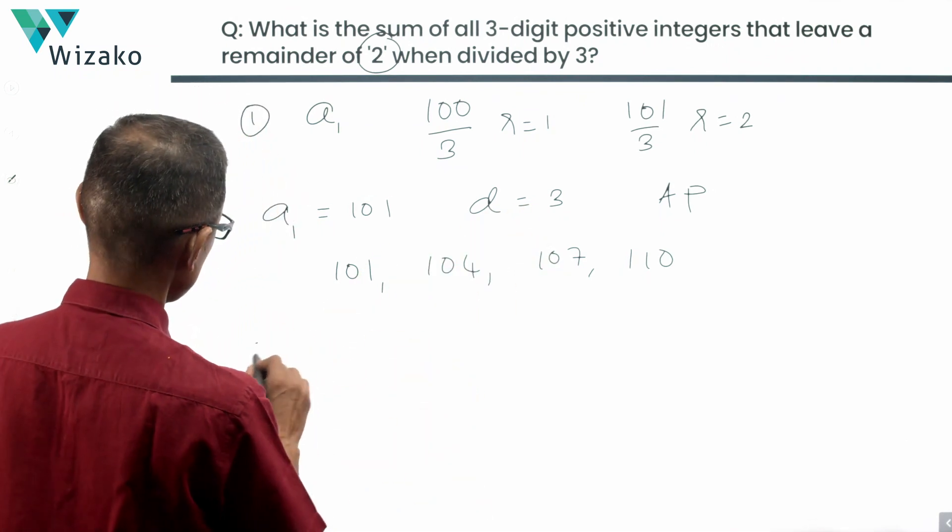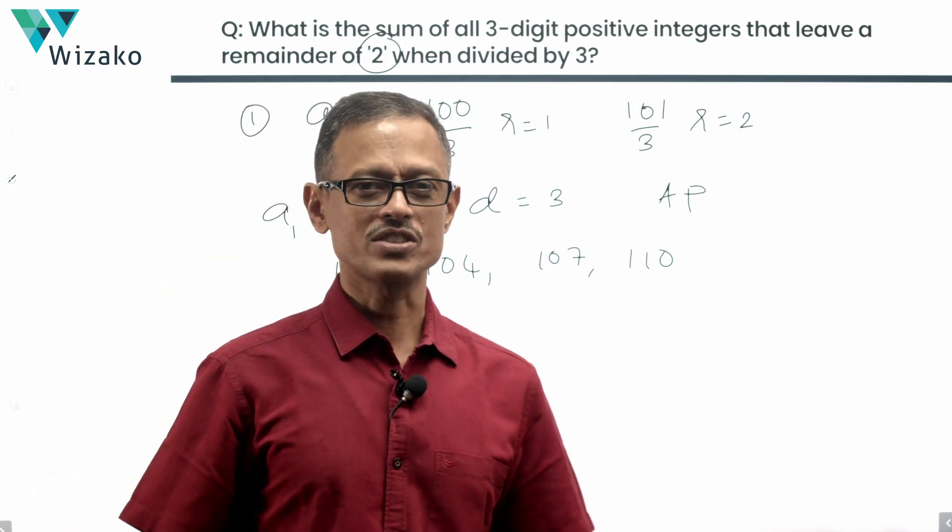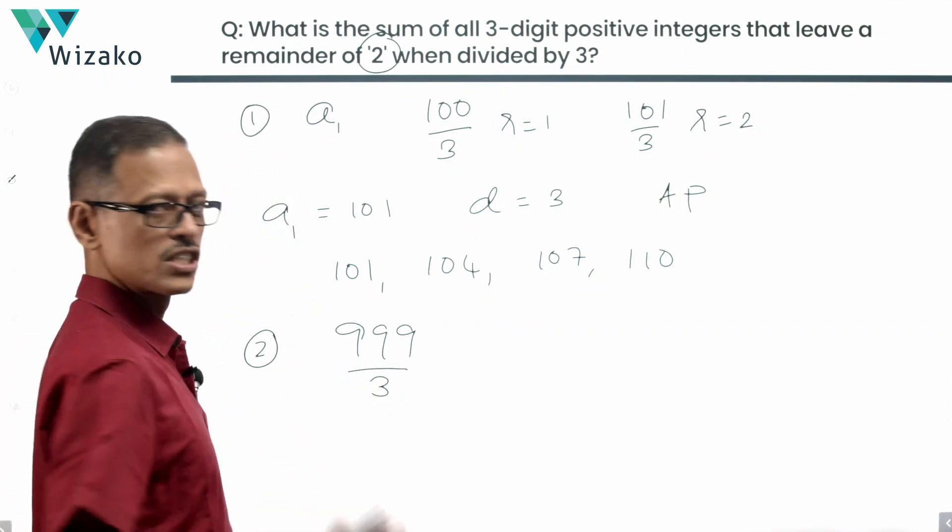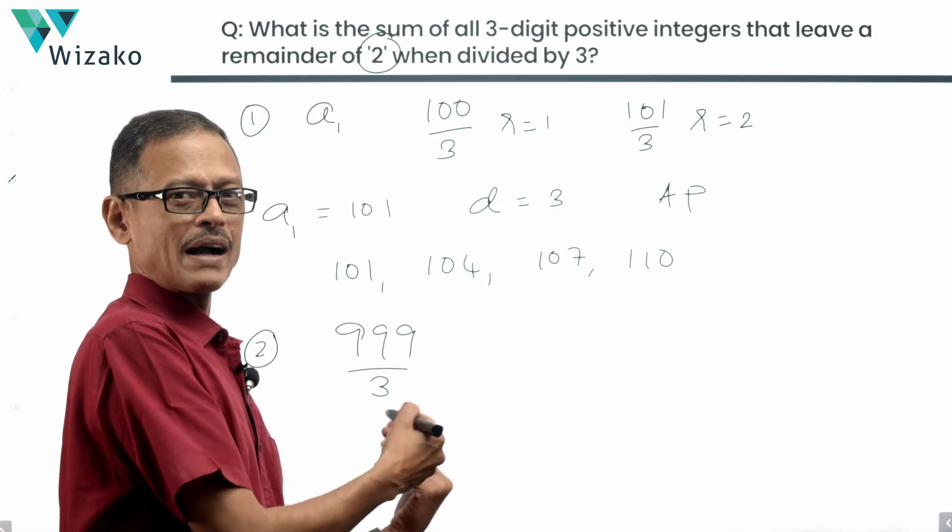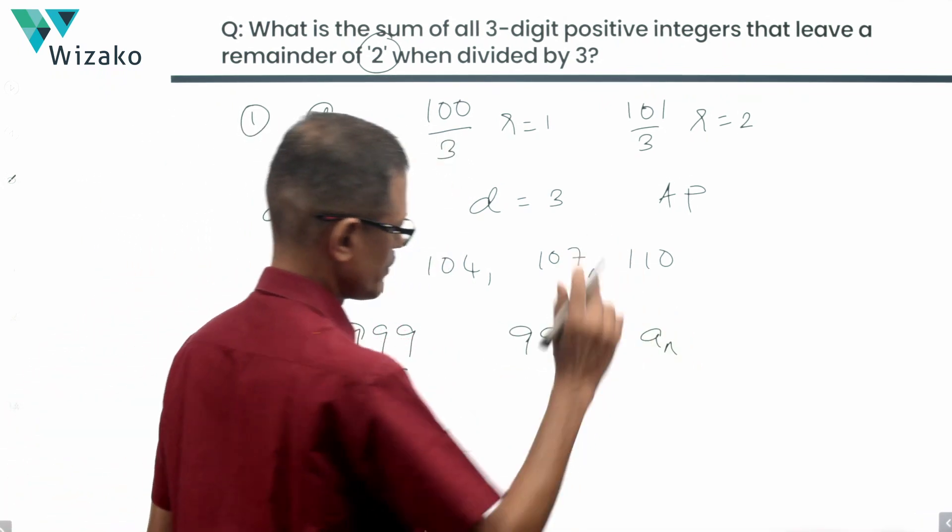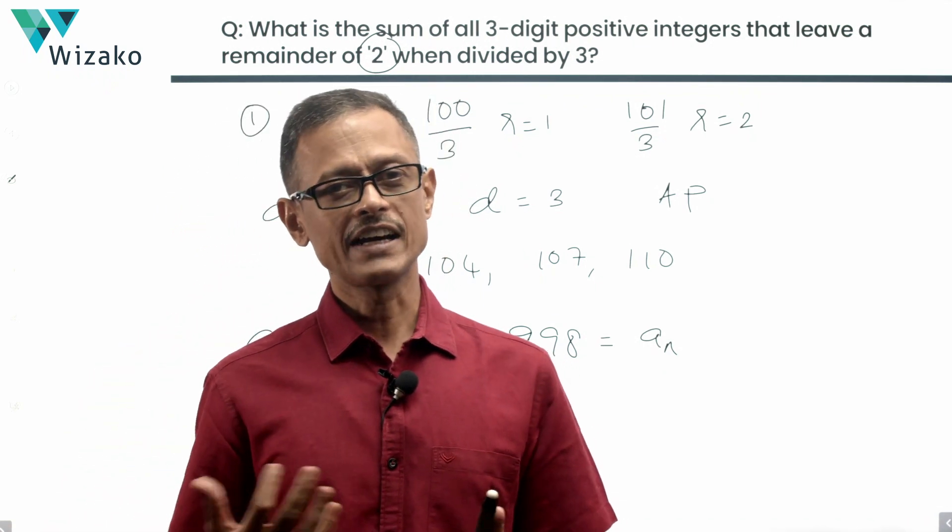Second step is to compute the last term of the sequence. Quickly, what's the largest 3 digit positive integer? 999. 999 is perfectly divisible by 3, so no remainder. So if you want a remainder of 2, go one step back. 998 is my last term of the sequence because this is the largest 3 digit positive integer that will leave a remainder of 2 when divided by 3.